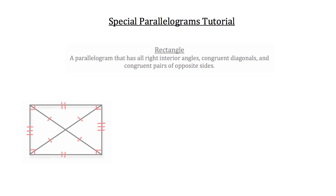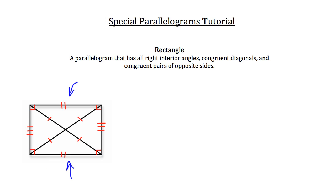Lastly, let's talk about rectangles. A rectangle is a parallelogram that has all right interior angles, congruent diagonals, and congruent pairs of opposite sides. You can see that we've indicated all of that here in the diagram. Opposite sides of the rectangle are congruent to each other. All four sides of the rectangle aren't necessarily congruent to each other, but the opposite sides are. Also, the diagonals are congruent to each other. They don't intersect perpendicularly, but they are congruent to each other.